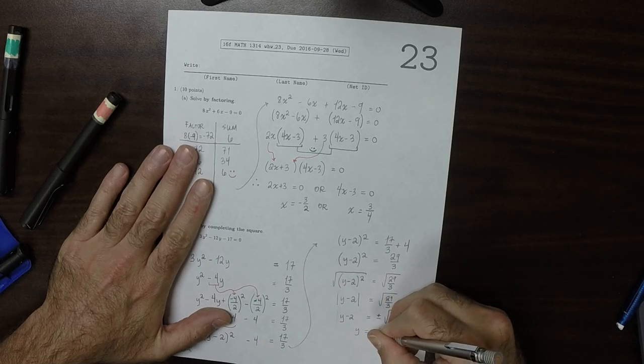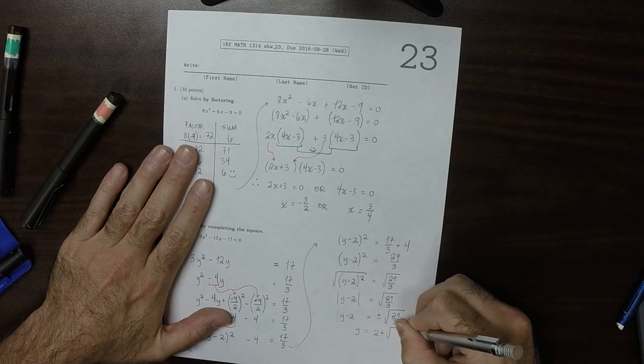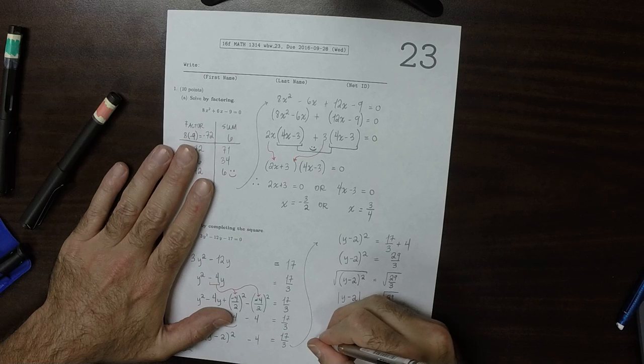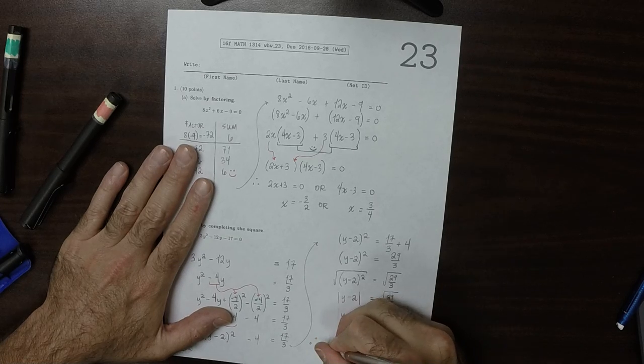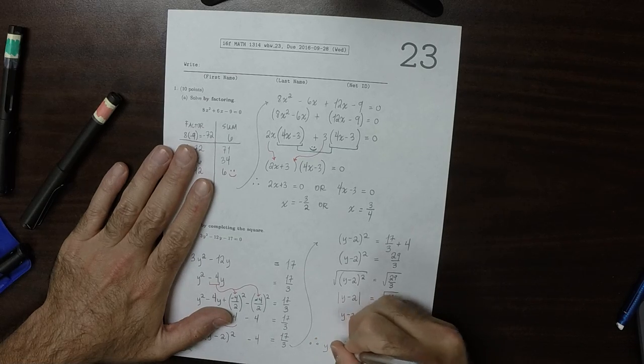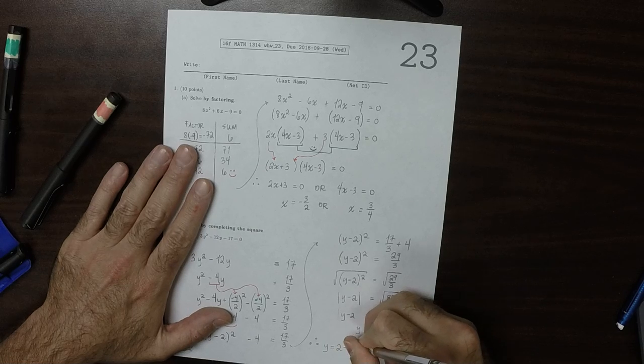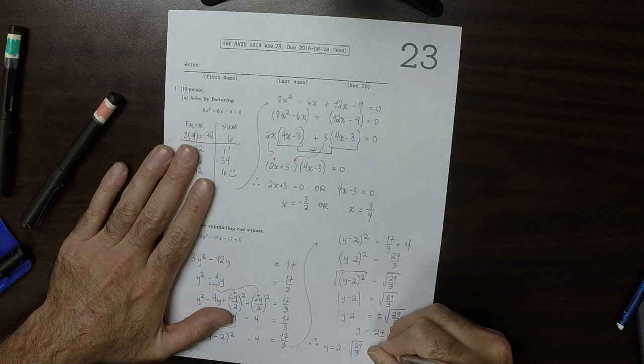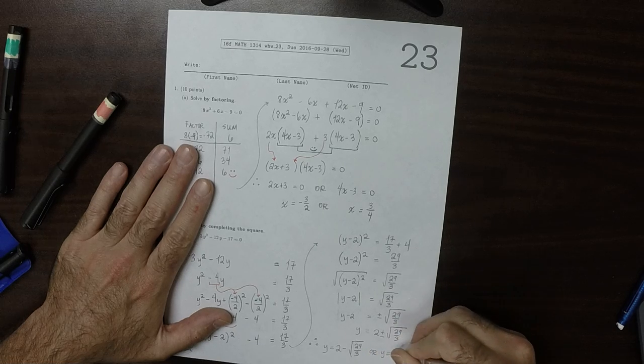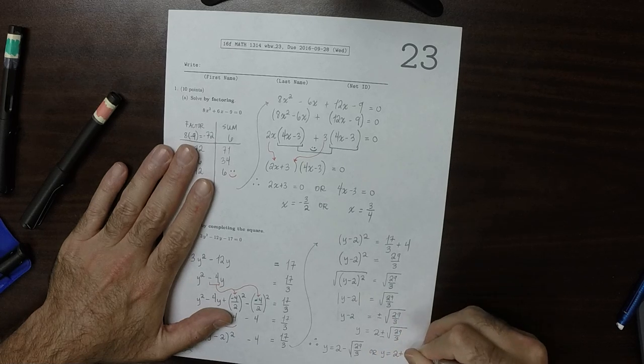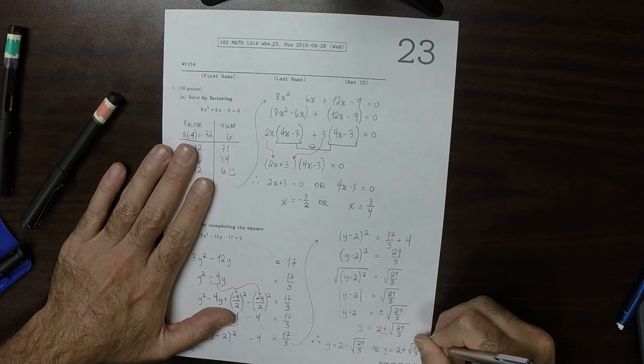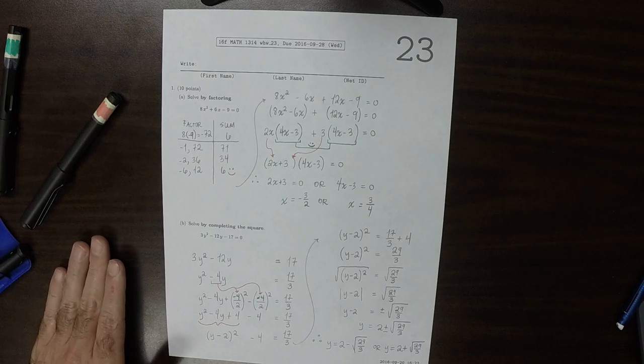So y is 2 plus or minus the square root of 29 over 3. Therefore, the two solutions are 2 plus or minus the square root of 29 over 3. And that's the answer.